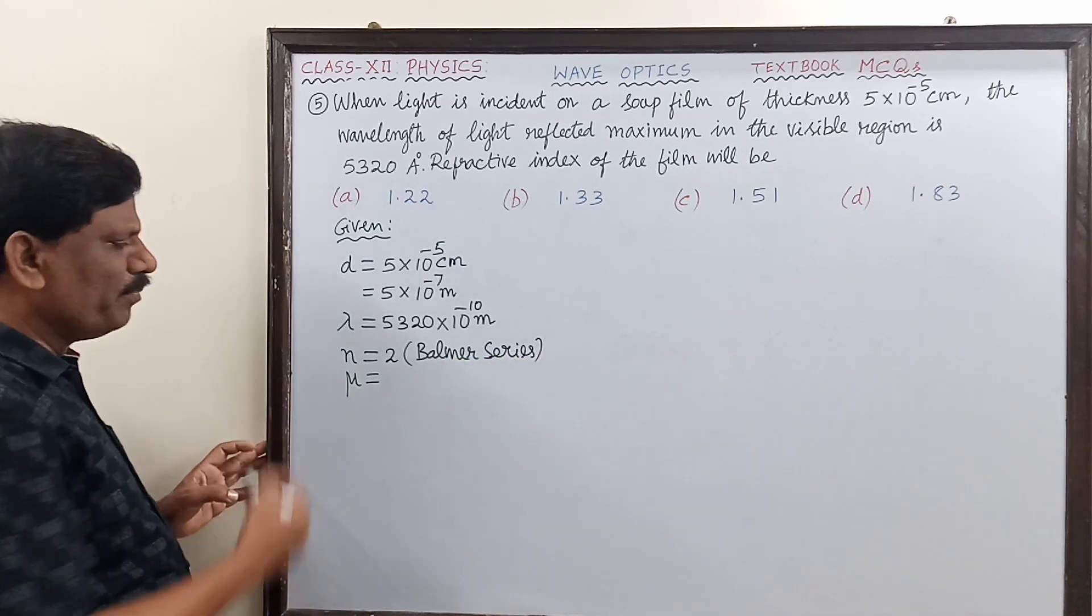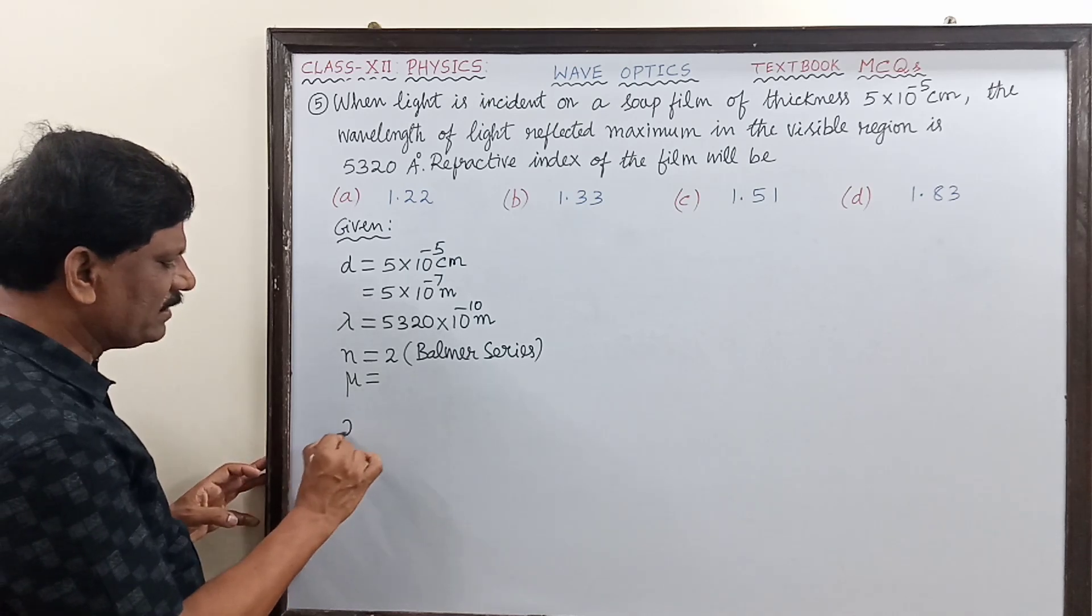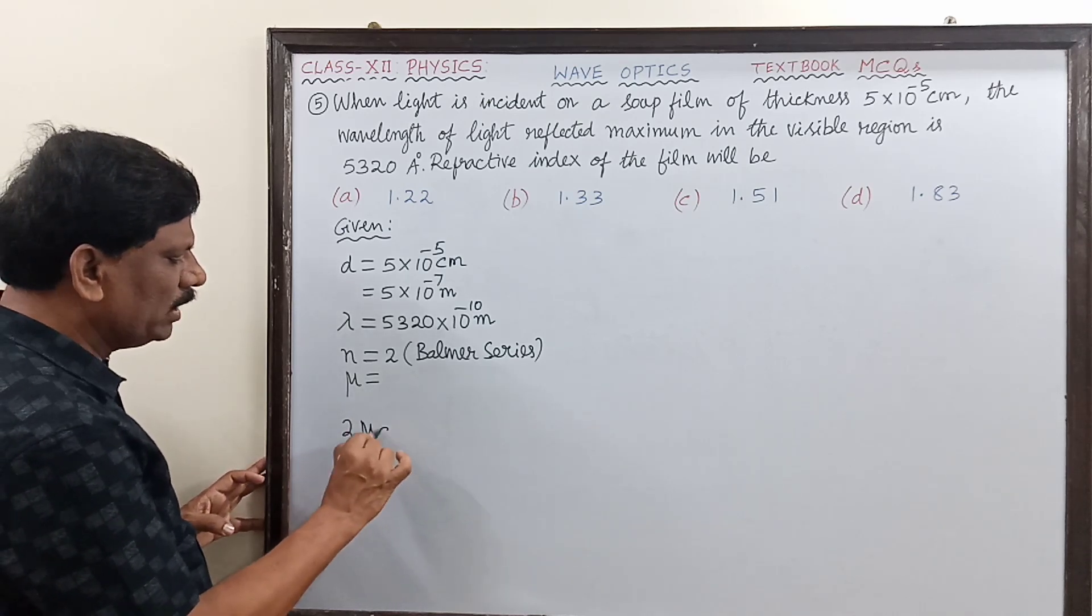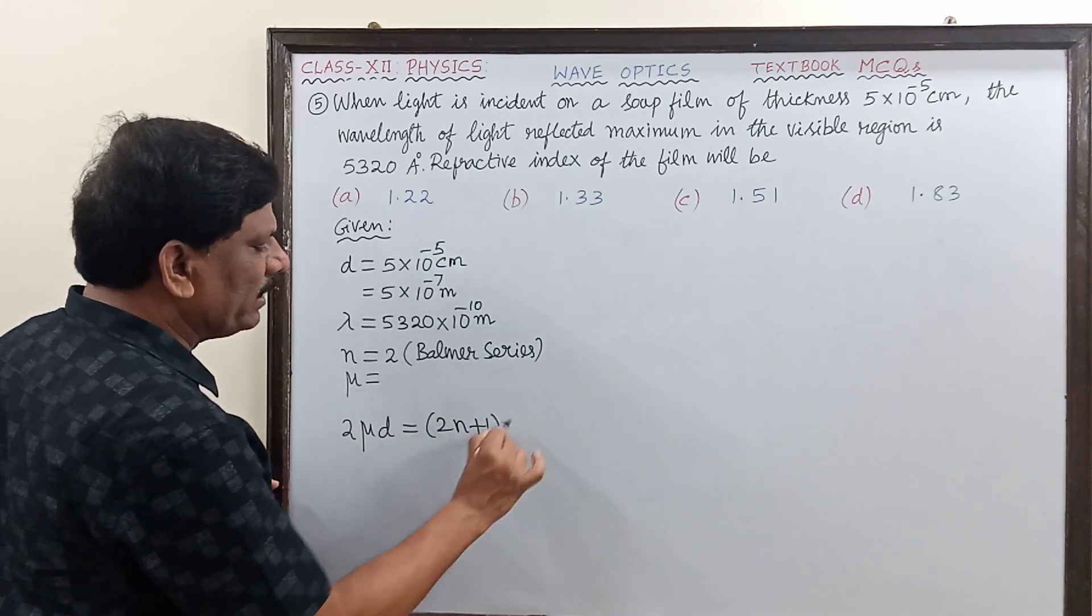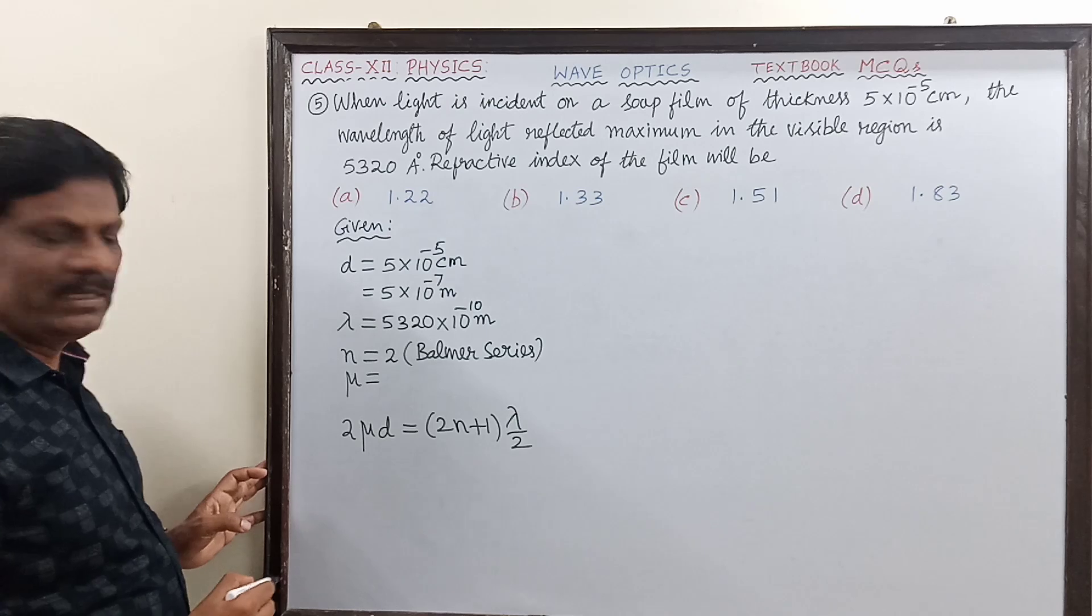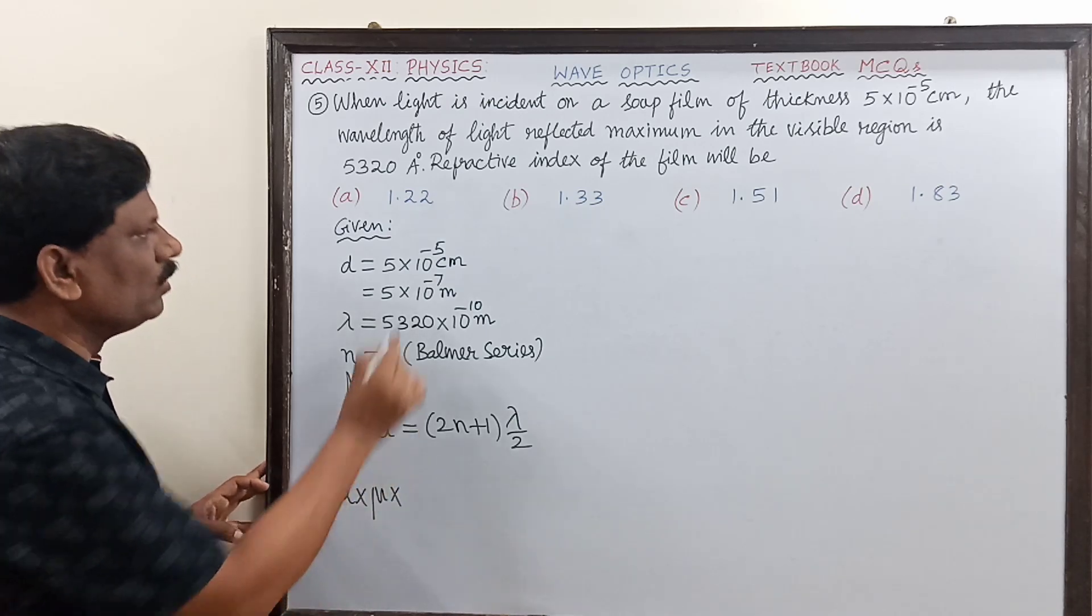Now μ is the refractive index. The path difference formula is 2μd = (2n+1)λ/2.